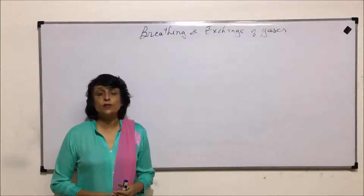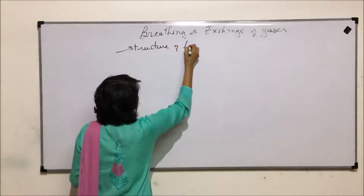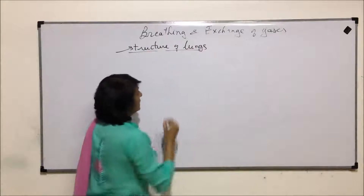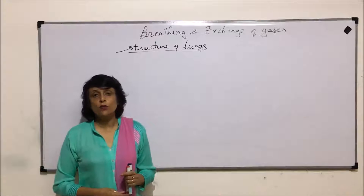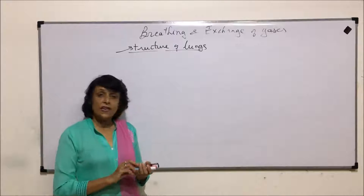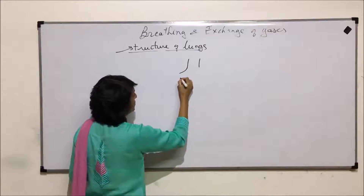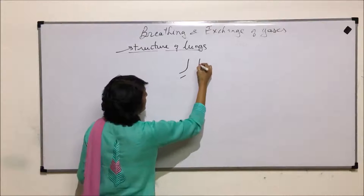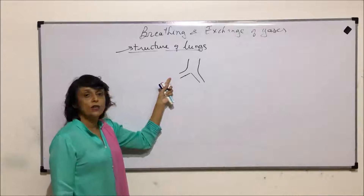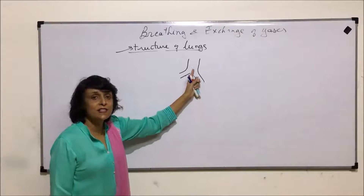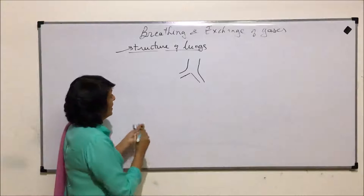In this video, we'll talk about the structure of the lungs. We have seen that the trachea divides into two branches, that is the bronchi. The right bronchus goes into the right lung and the left one goes into the left lung. The right bronchus is wider and more vertical, while the left one is narrower and more horizontal. Now they enter into the lung.